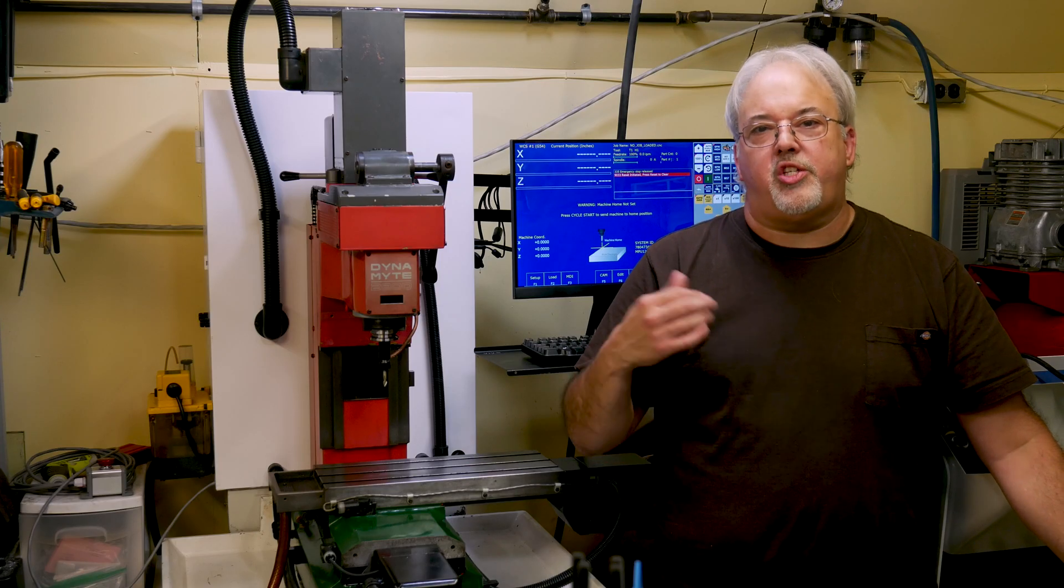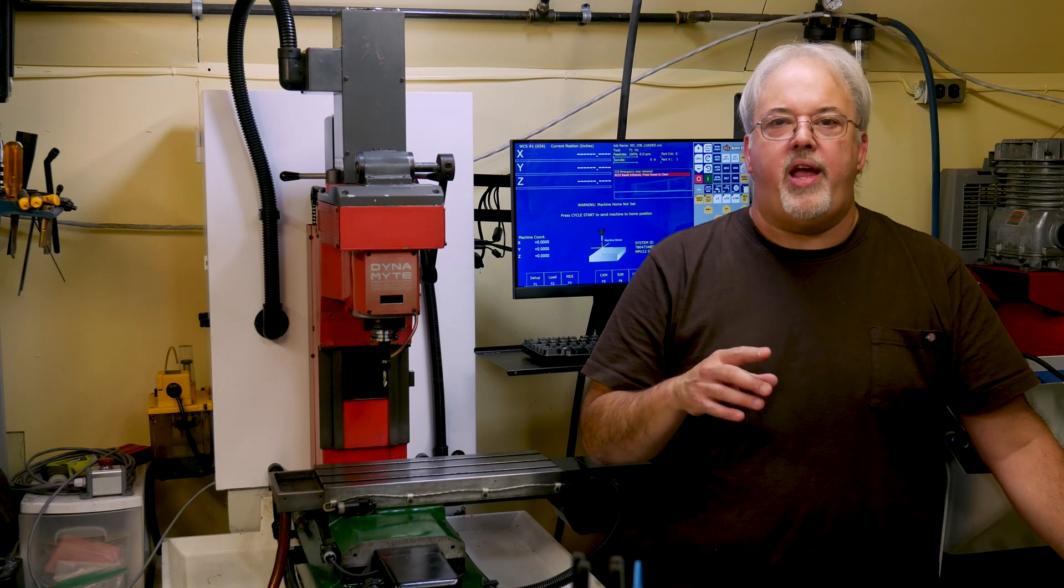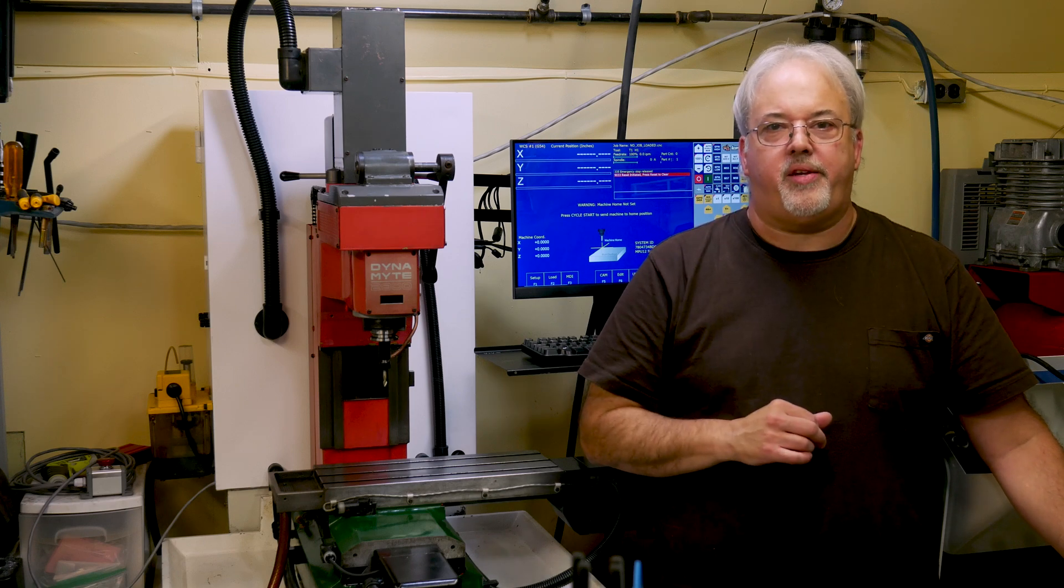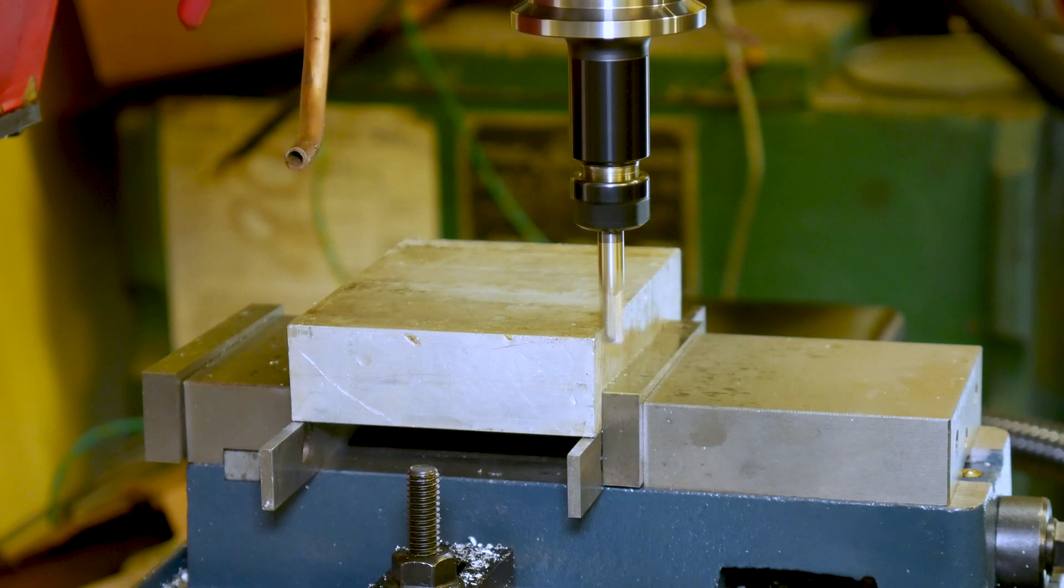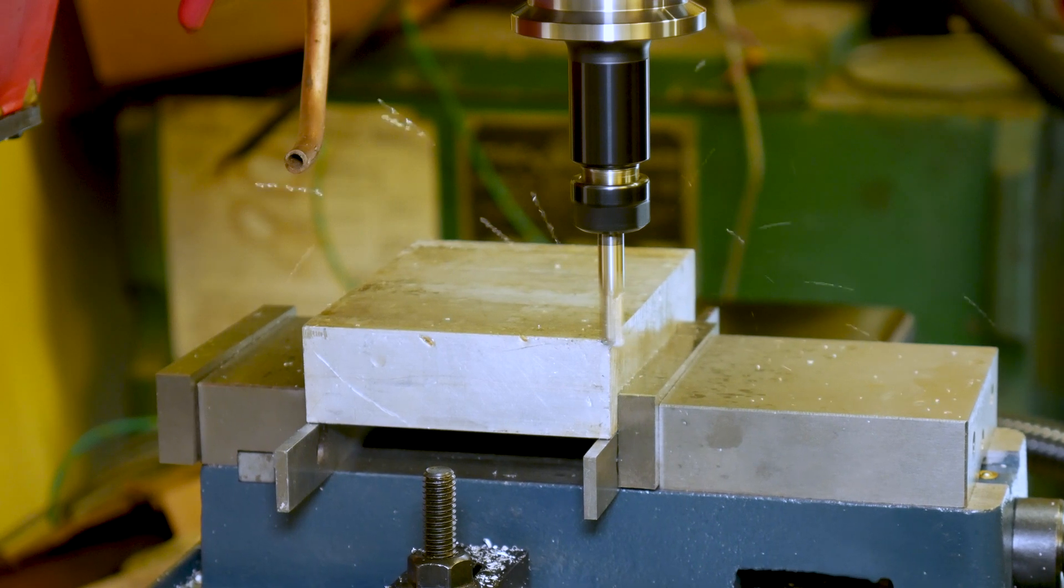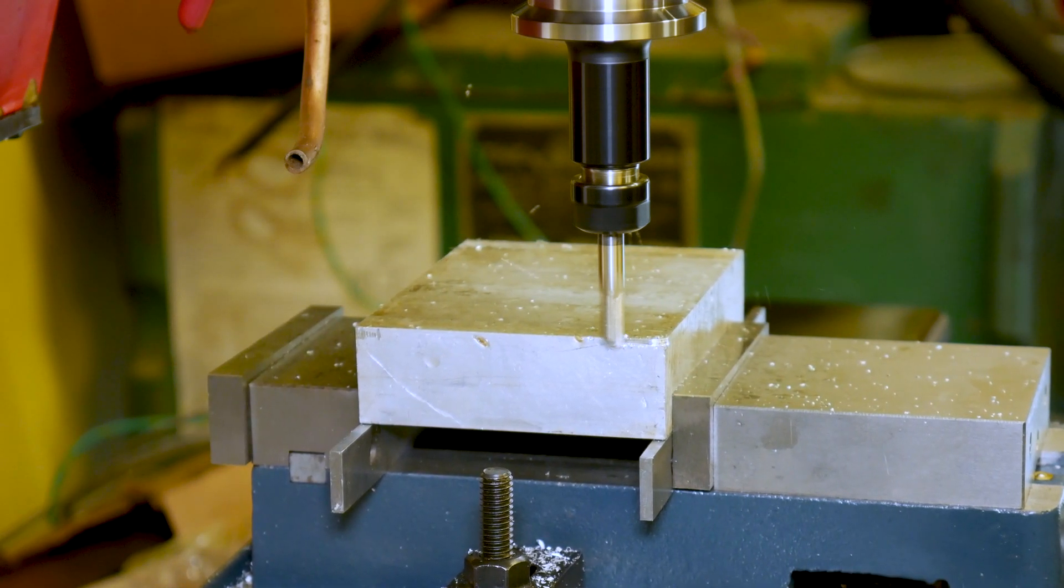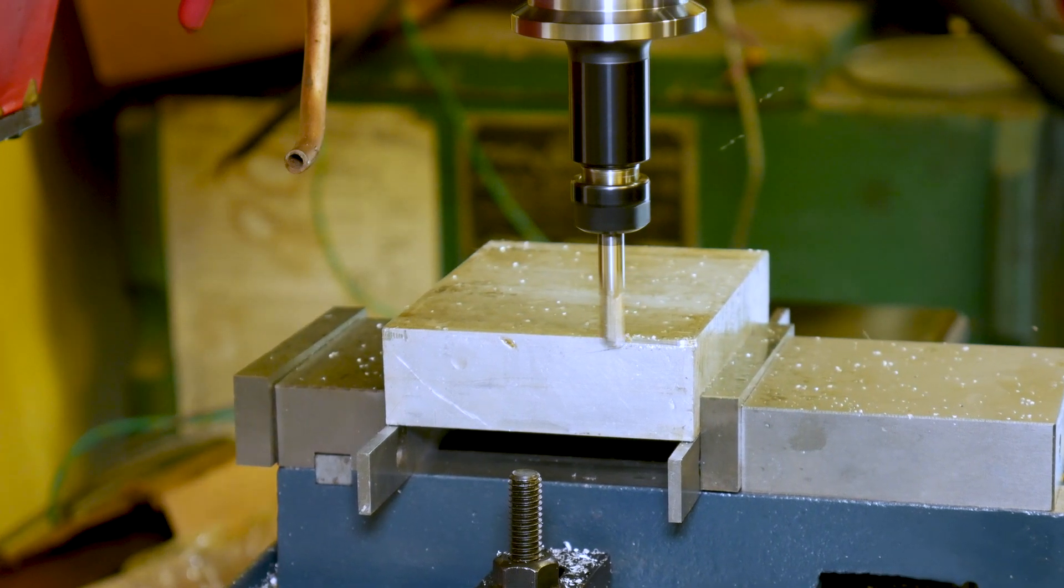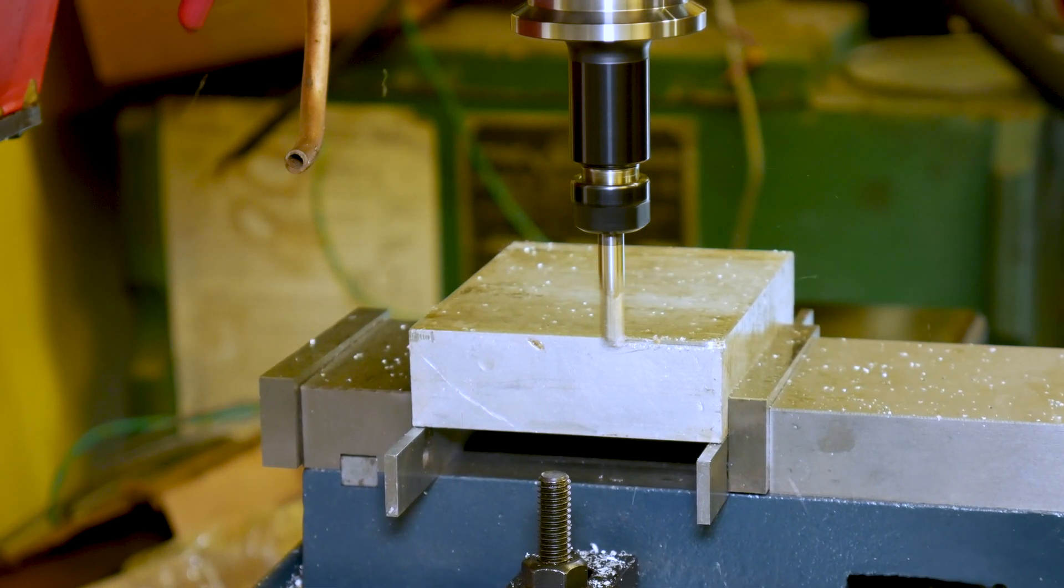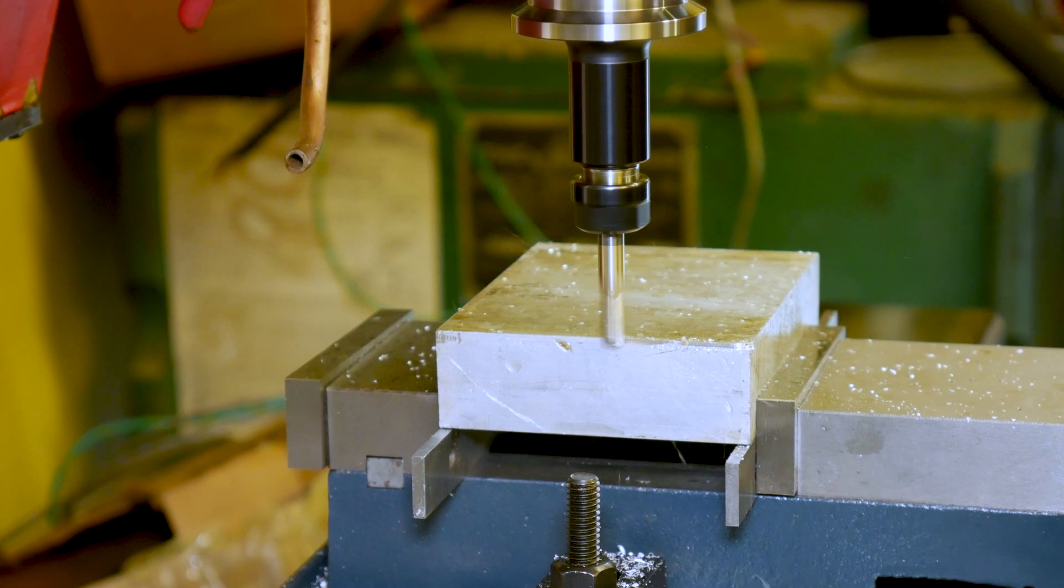The actual problem was that the spindle wasn't set to the same range that CNC-12 was expecting. So finally, I decided to do something a bit more ambitious. I designed a simple part with a few features in Fusion 360, then used the adaptive clearing roughing strategy to generate a toolpath and exported it with the centroid post processor.